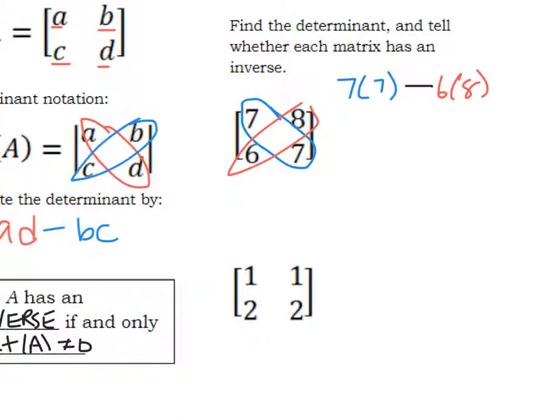So that's going to give me 49 minus 48, which is 1. So yes, it would have an inverse, or rather, has an inverse. I should be more clear right there. That's okay. All right.